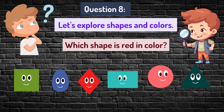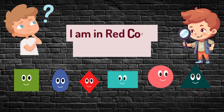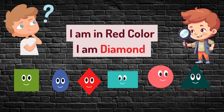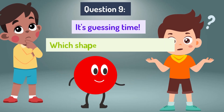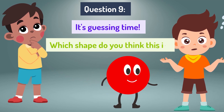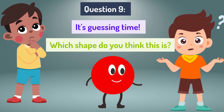Let's explore shapes and colors. Which shape is red in color? There is only one red shape. My color is red and I am a diamond. Question 9 — it's guessing time. Which shape do you think this is?